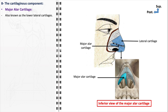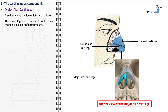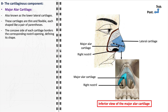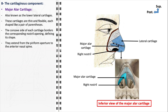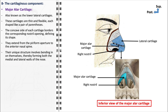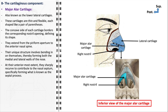The major alar cartilage, also known as the lower lateral cartilages, is characterized by its thin and flexible nature, each resembling a pair of parentheses in shape. This design allows them to border the corresponding nostril opening, and their flexibility is essential for the nostrils' ability to expand and contract during breathing. These cartilages extend from the piriform aperture to the anterior nasal spine, bending in on themselves to form both the medial and lateral walls of the nose. At their anterior-most extent, the major alar cartilages sharply recurve to form the septal process.